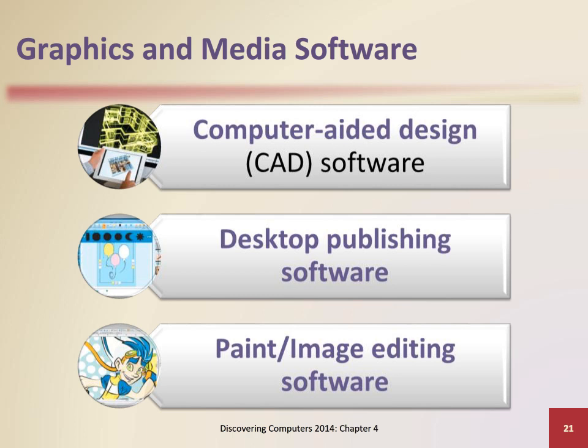Desktop publishing software is used to produce high-quality color documents such as textbooks, corporate newsletters, marketing literature, product catalogs, and annual reports. This software also allows individuals to convert a color document into a format for use on the web. Paint/image editing software is used to create and modify graphical images such as those used in desktop publishing documents and web pages.